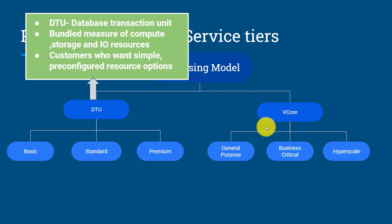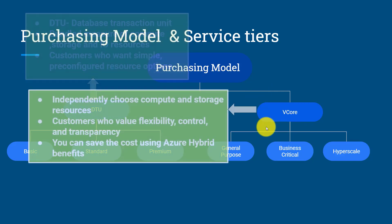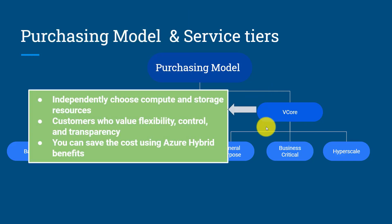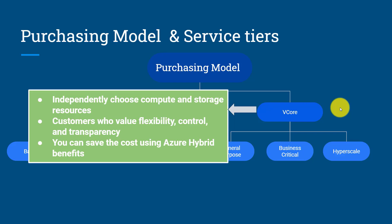In the vCore based purchasing model, memory and CPU are defined in a vCore, and it depends on the hardware generation and the service tier. vCore based purchasing model allows you to register your on-premises SQL Server licenses to reduce cost using Azure Hybrid Benefit. You can independently choose compute and storage. Customers who value flexibility, control, and transparency can go with the vCore based purchasing model.